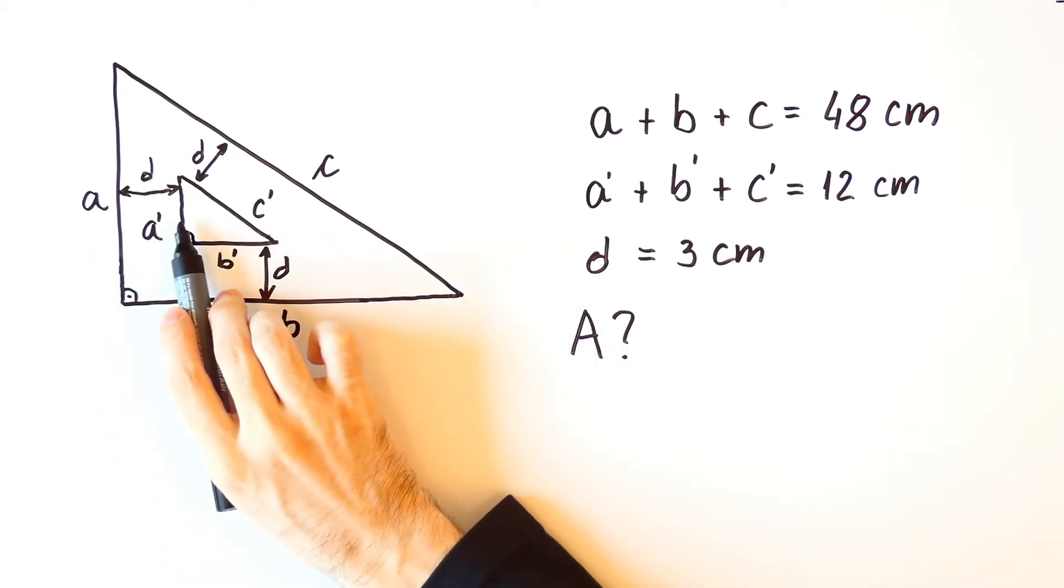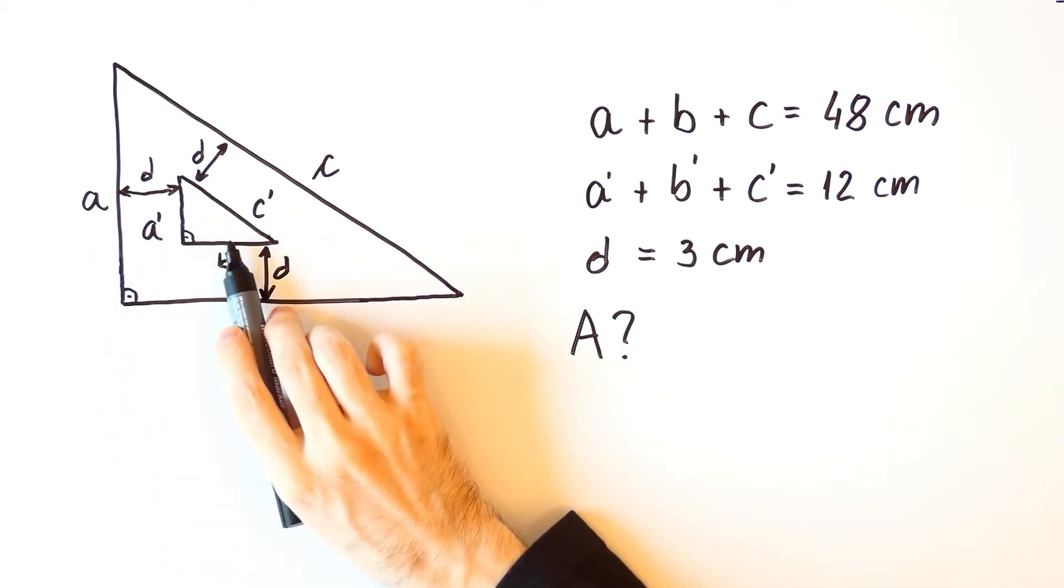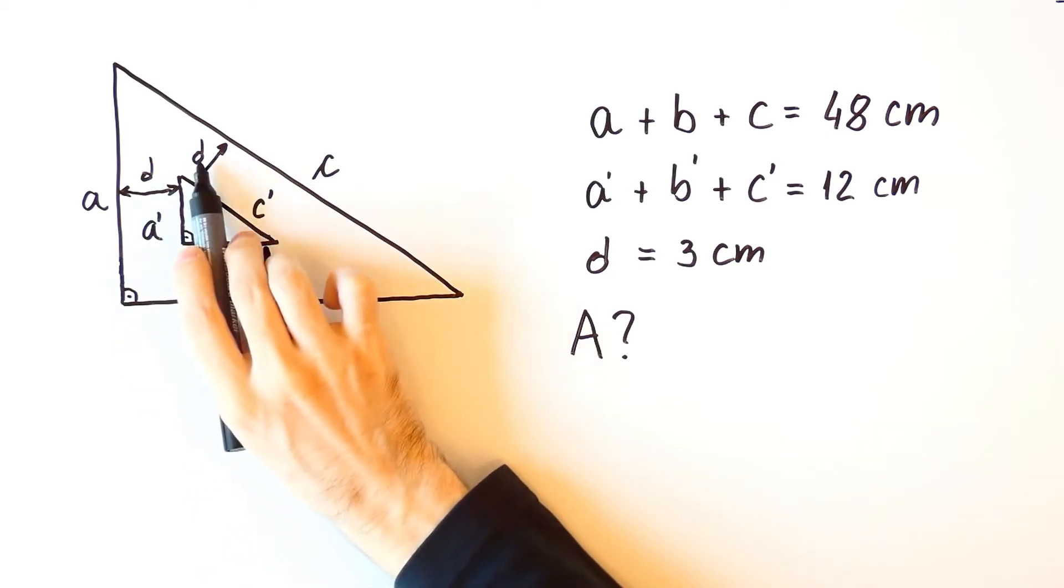Distances between A and A', B and B', and C and C' are all equal to D.